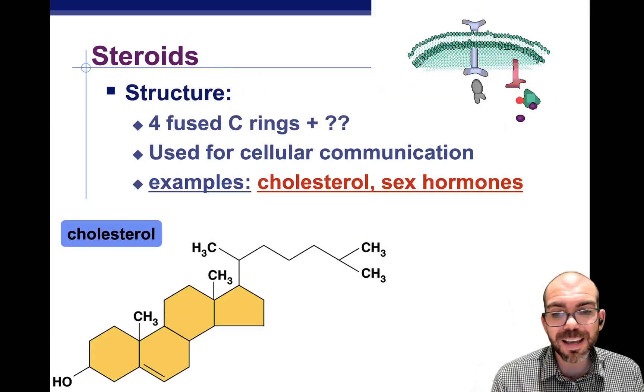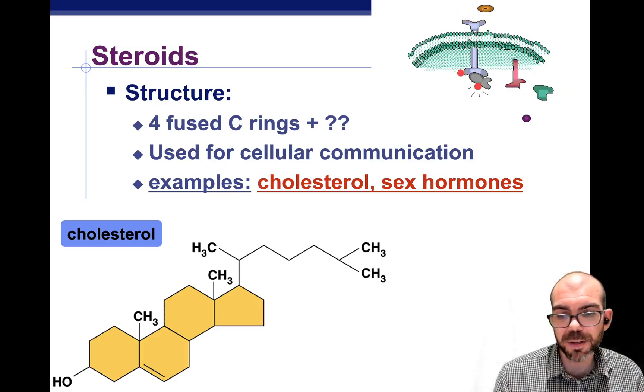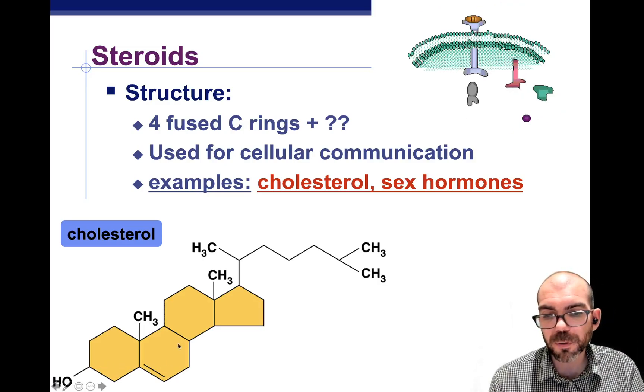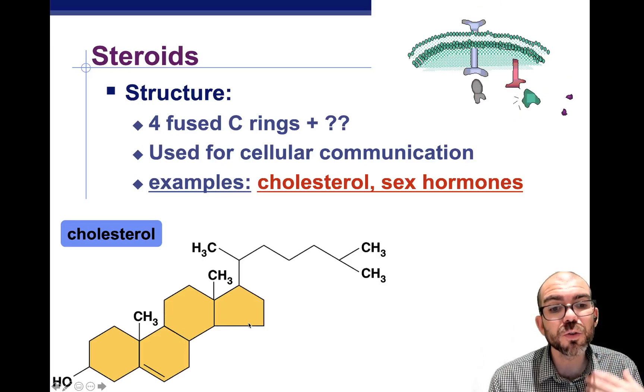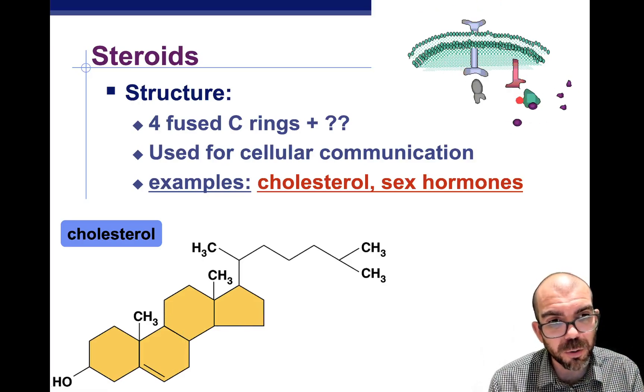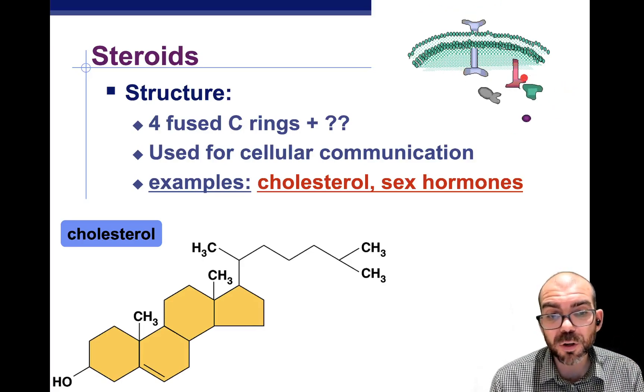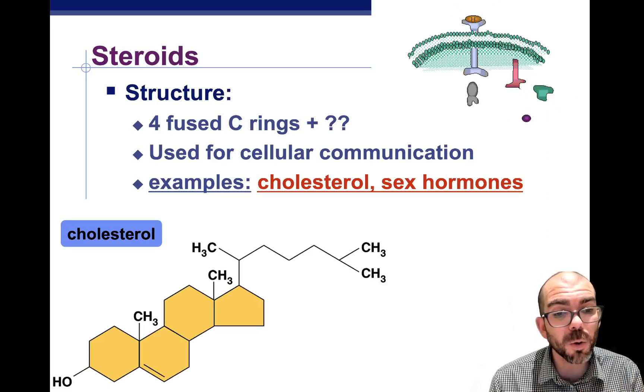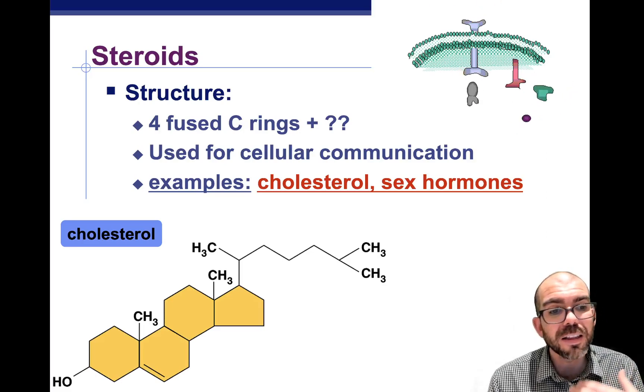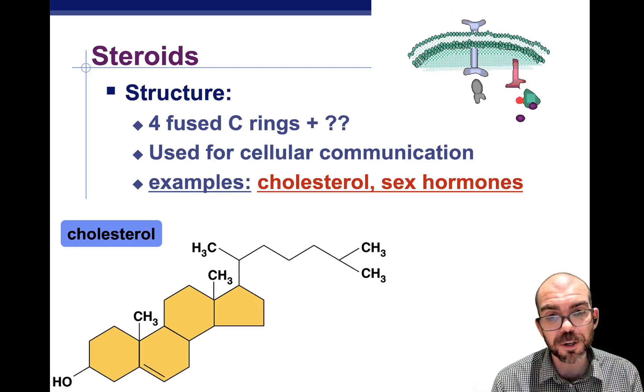Another special kind of lipid is a steroid. Steroids look nothing like the other lipids. They're actually four carbon rings fused together. What makes a steroid unique is this is used as a communication molecule and used to regulate genes in your body. Some great examples are cholesterol. It's found in the cell membrane and makes things more fluid. And sex hormones, testosterone, and estrogen, the things that can cause genes to turn on or off in different cells to cause different genetic expression.